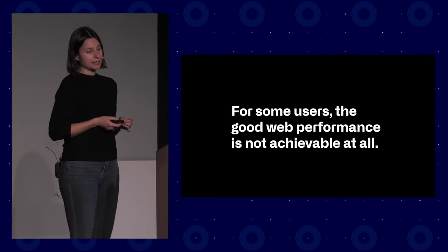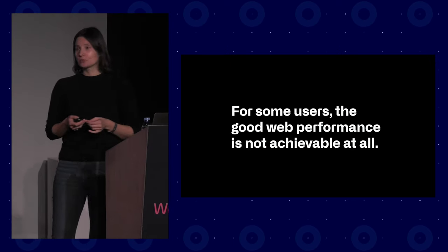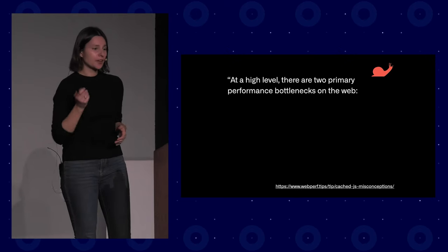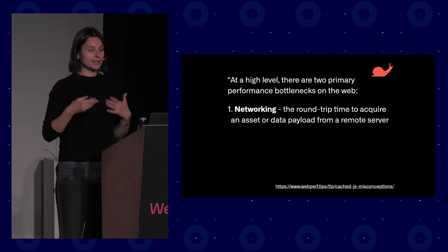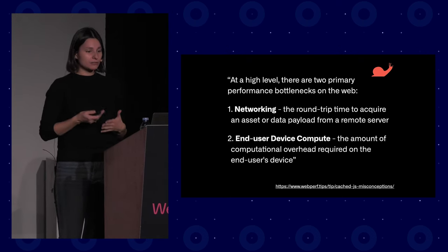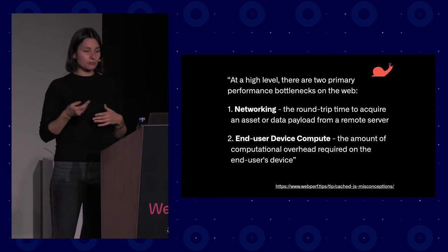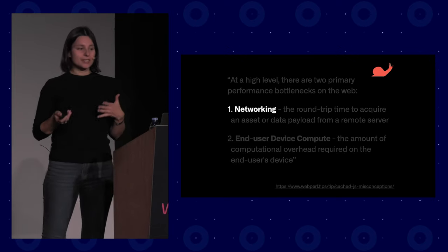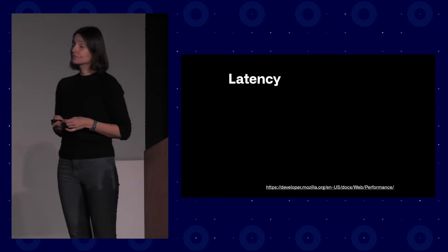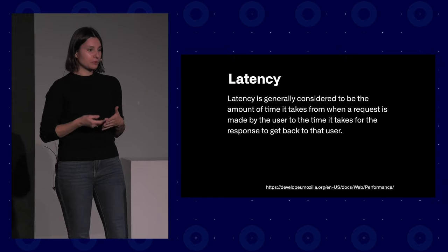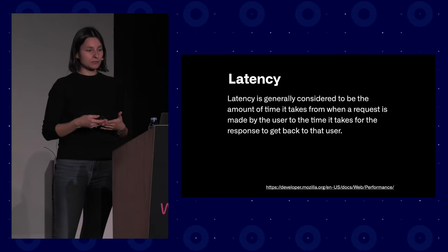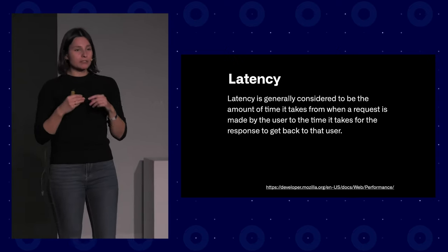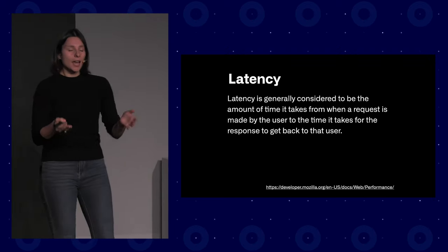To support this, here's a quote about misconceptions around caching JavaScript: at a high level, there are two primary performance bottlenecks of the web. First is networking — the round-trip time to acquire an asset or data payload from a remote server. Second is end-user device compute — the amount of computation overhead required on the end-user's device. Let's start with networking. The networking definition is very similar to latency, which is the time from when a request is made by the user to when the response gets back to that user.